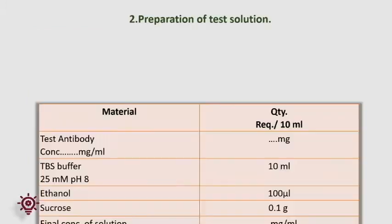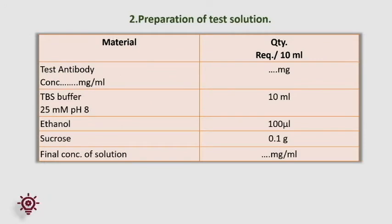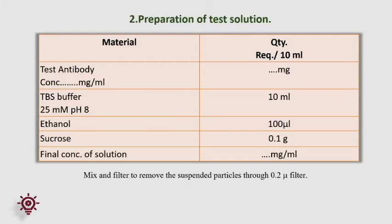Preparation of test solution: calculate and dilute the required quantity of stock antibody with TBS buffer and other components to obtain the final concentration of specific milligrams per mL in the required quantity of test solution. Mix and filter to remove suspended particles through a 0.2 micron filter.